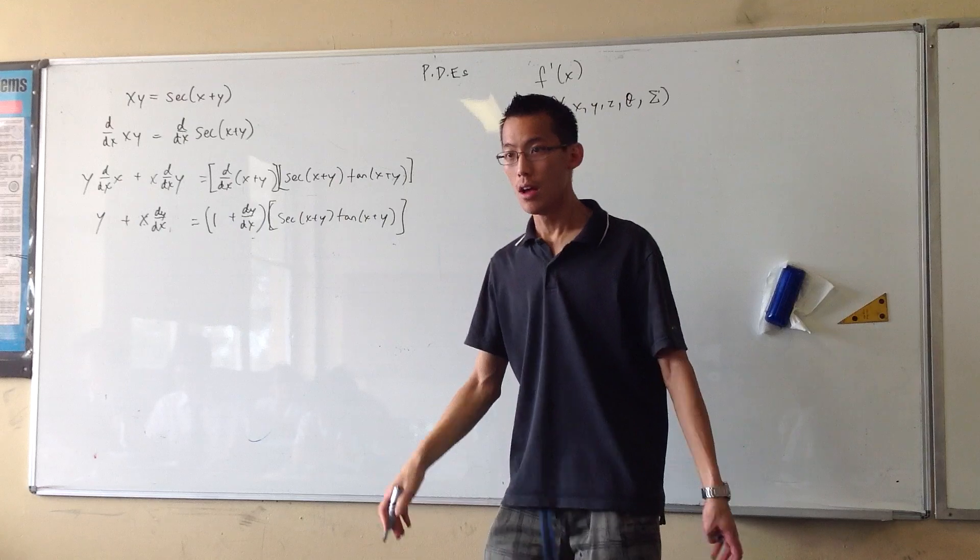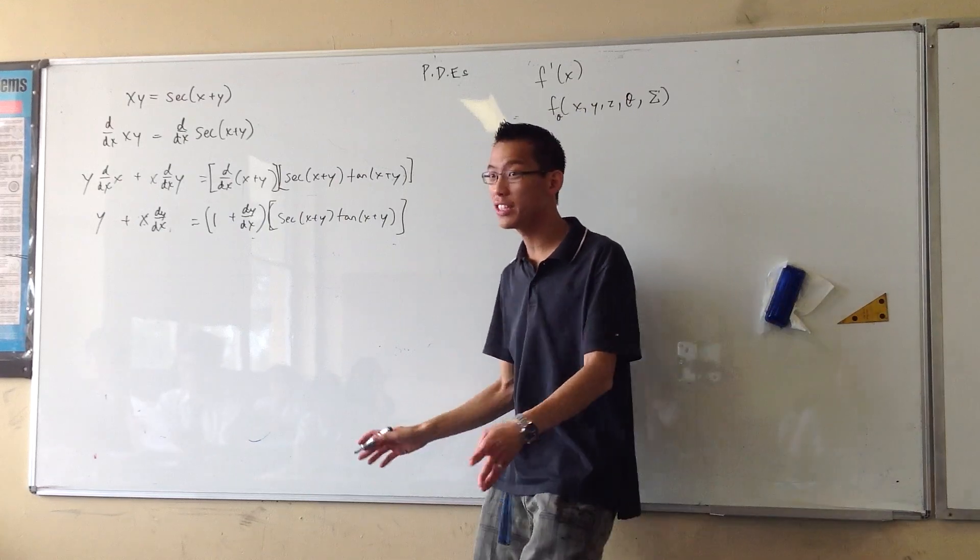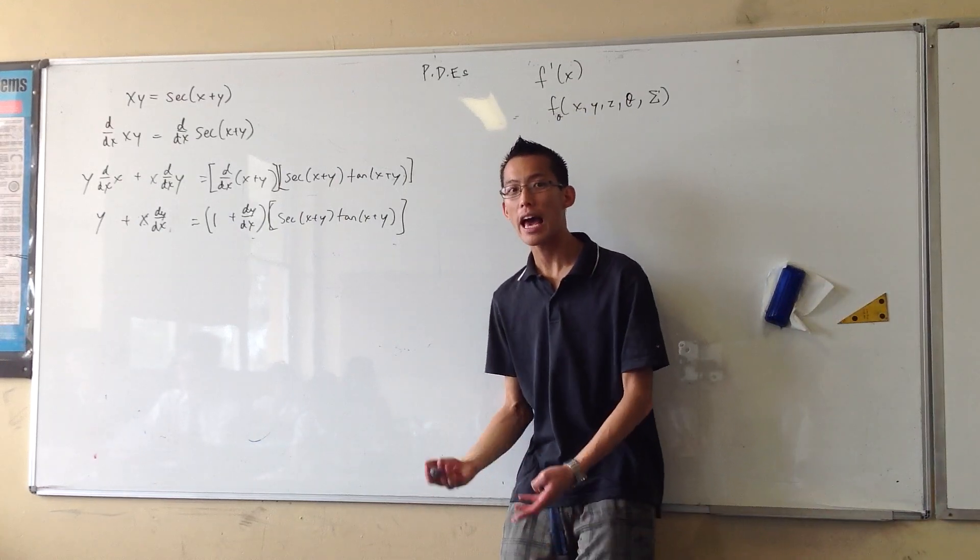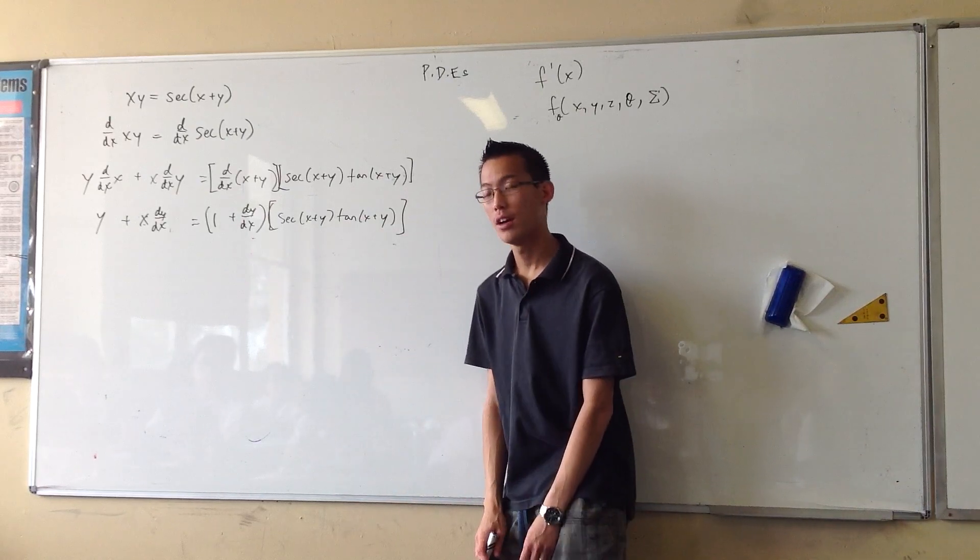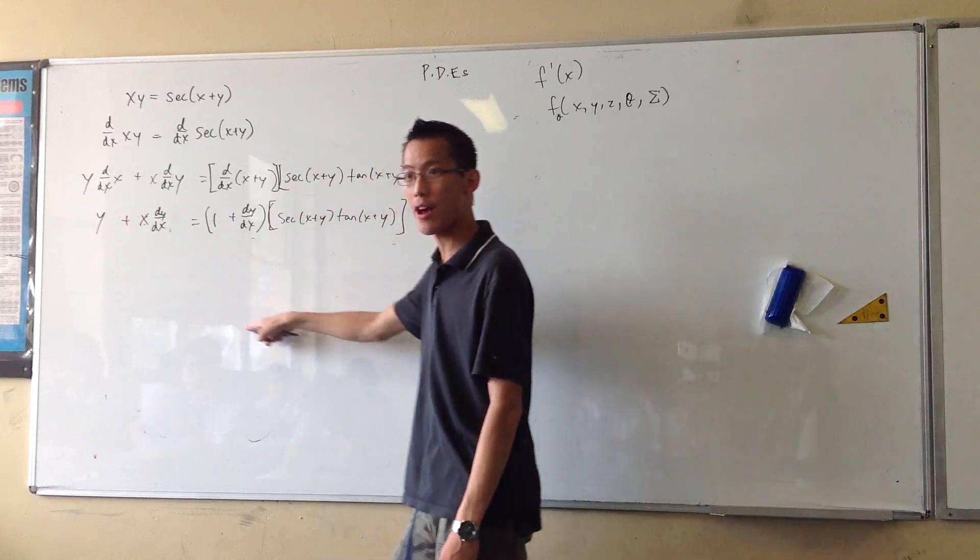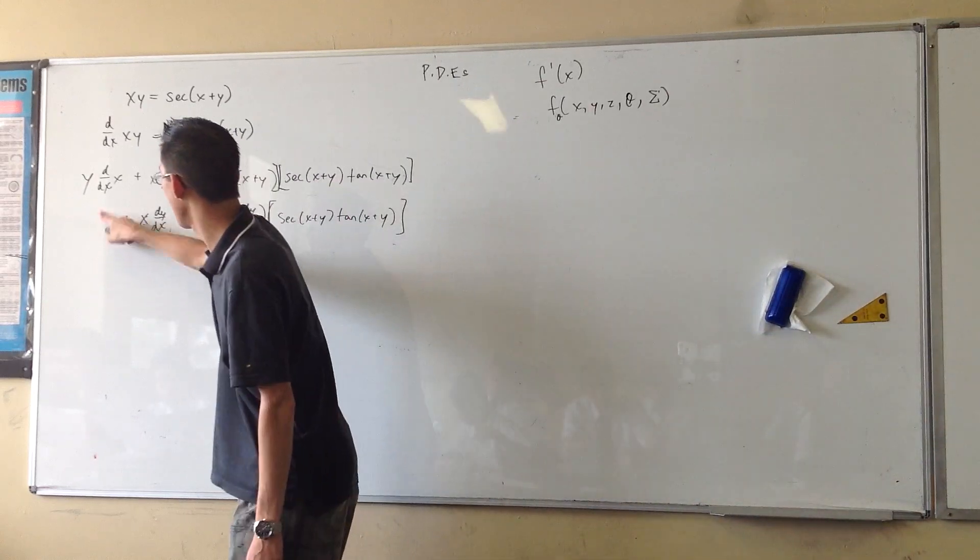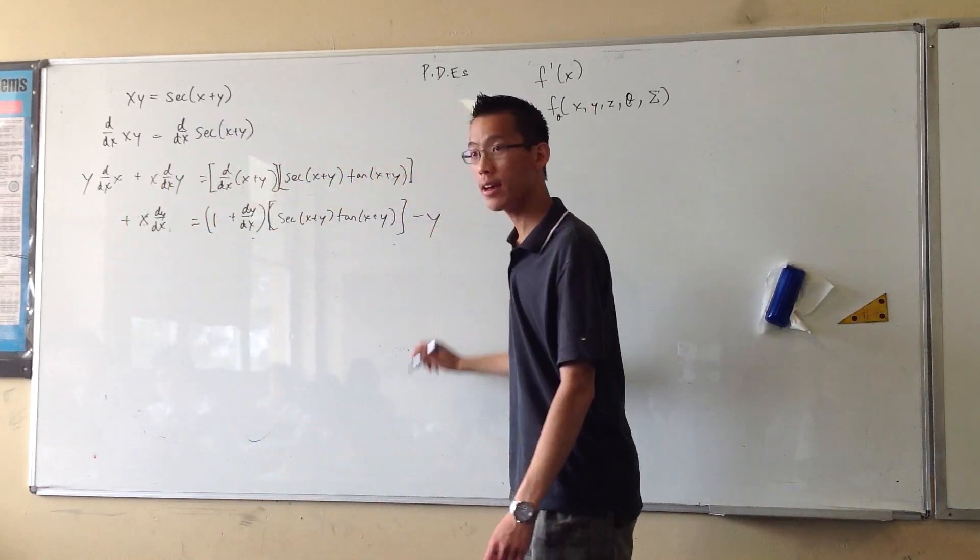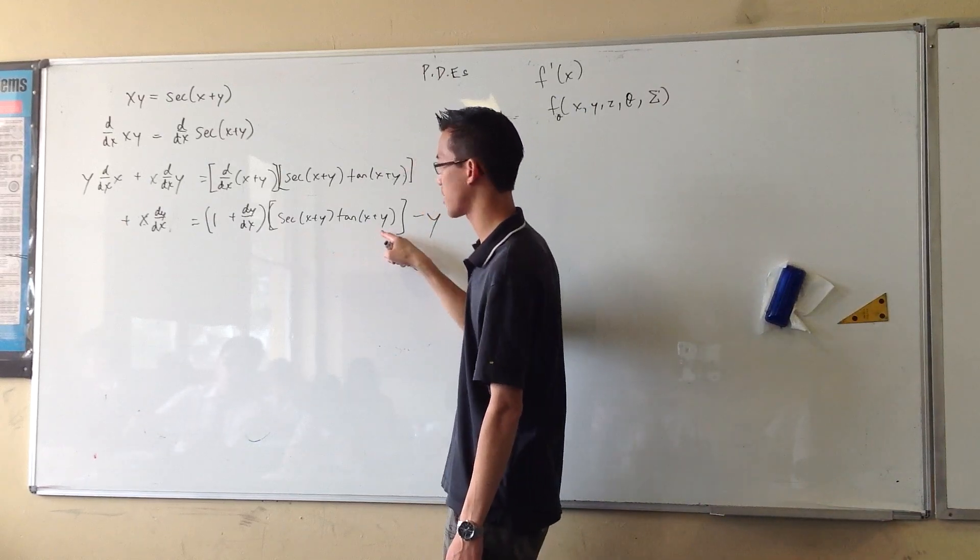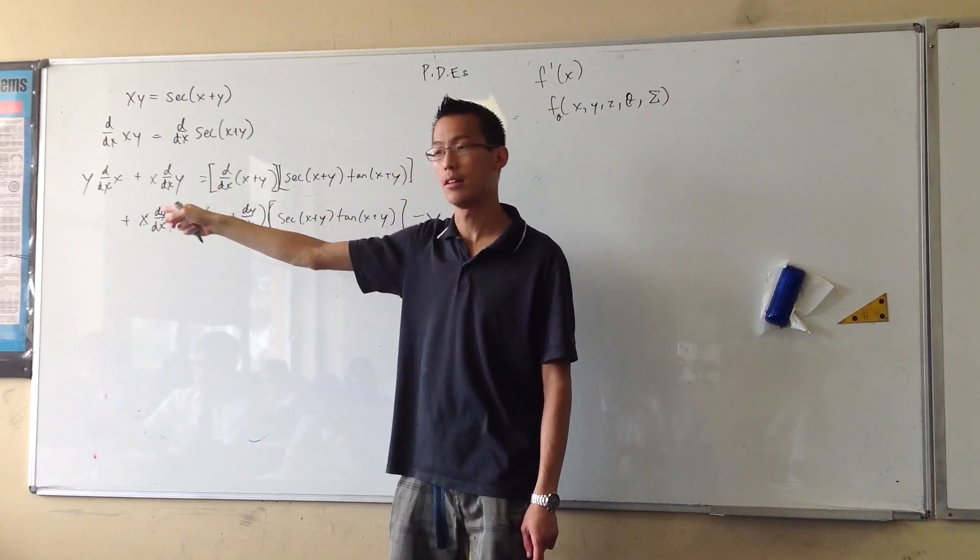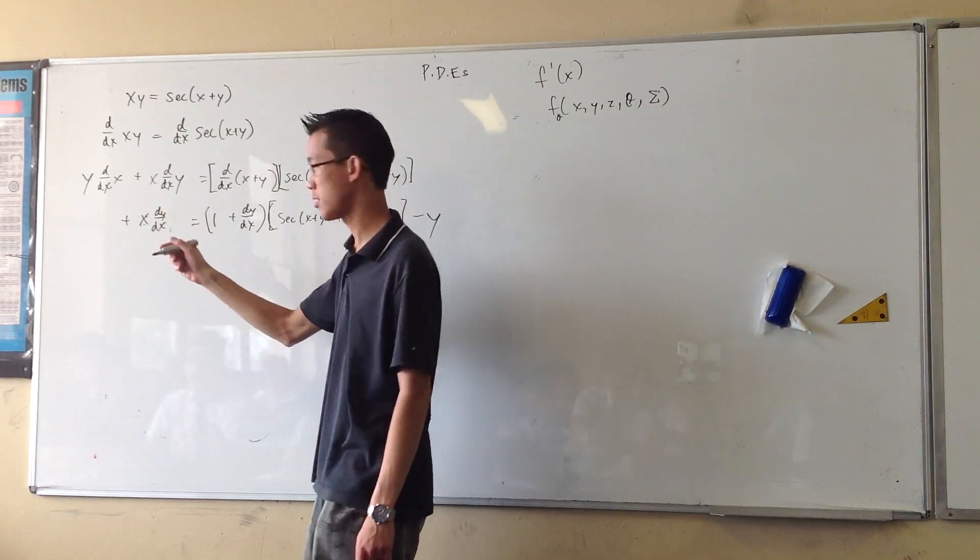Now, from here, I've done all the differentiating. All I have to do is make dy/dx the subject. That's it. So, in order to do that, number one, I've got to get this y over here. So, I'm just going to say minus y. And then I've got to get this, this dy/dx times that, I've got to get it on the other side. So, that's what I'll do on this step.